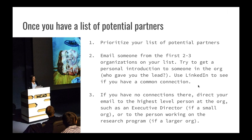At this point, assume you have a list of potential partners — and you should have a list, with a lot of options. Take advantage of the brainstorming and get many ideas. Then prioritize this list: where would you most like to partner, all the way down through the other options. Start at the top and email someone from the first two to three organizations on your list. Try to get a personal introduction; use LinkedIn to find common connections. If you have no common connections, it's still okay to reach out. For a small organization, direct your email to the highest-level person, such as an executive director. For larger organizations, reach out to a leader in their research program.